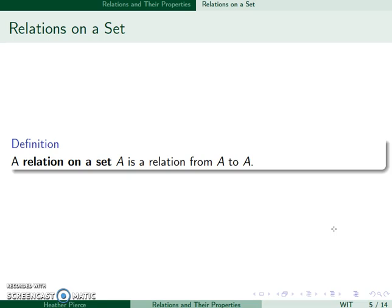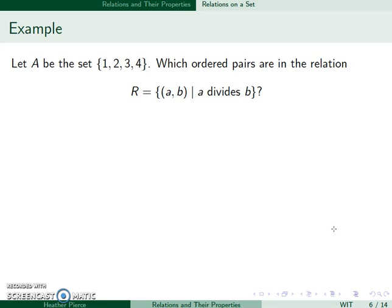We can also have a relation on a set. This is a relation from A to itself. So for example, let's let A be the set 1, 2, 3, 4. We want to know which ordered pairs are in our relation A, B, such that A divides B. So I need the first number to evenly divide into the second number.